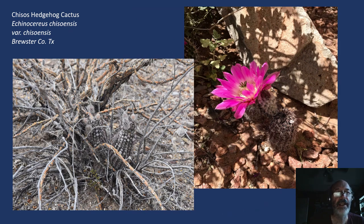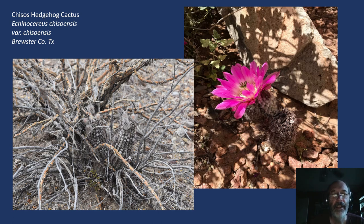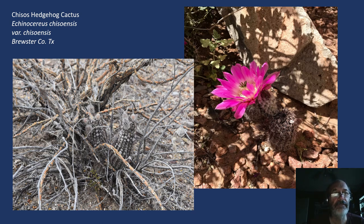Now we move into the genus Echinocereus, the hedgehog cacti. This one is an endemic found exclusively in Big Bend National Park — the Chisos hedgehog cactus. They're easily identified by the little cottony tufts on the areoles. On the left there's one just budding, and on the right one in bloom. It's not a very big hedgehog — maybe six inches for a large one — but a beautiful cactus, and like many of the hedgehogs, wonderful to have in the garden with a nice flower show.